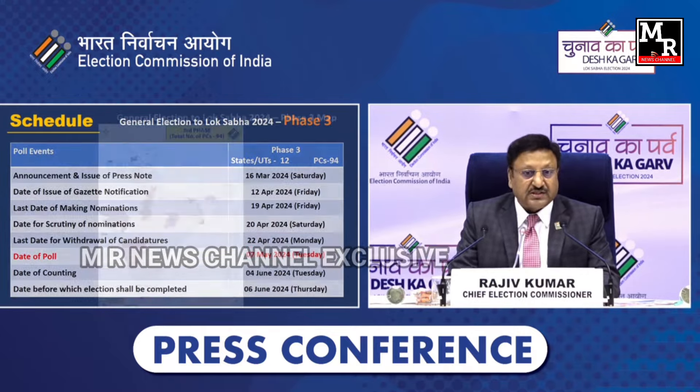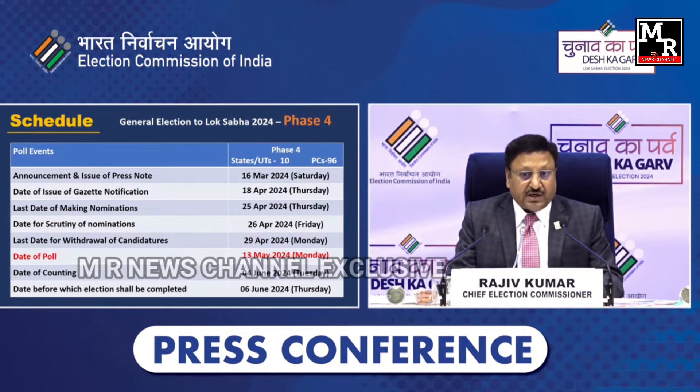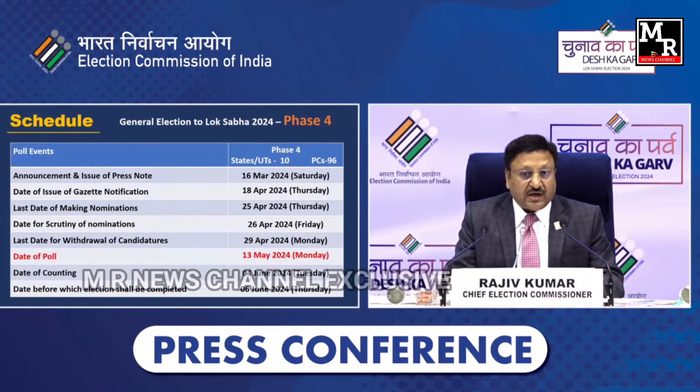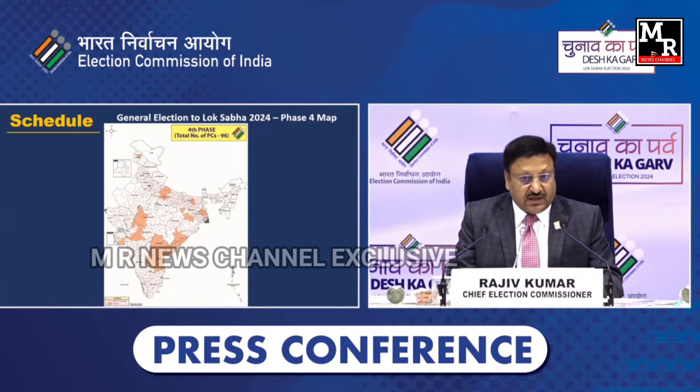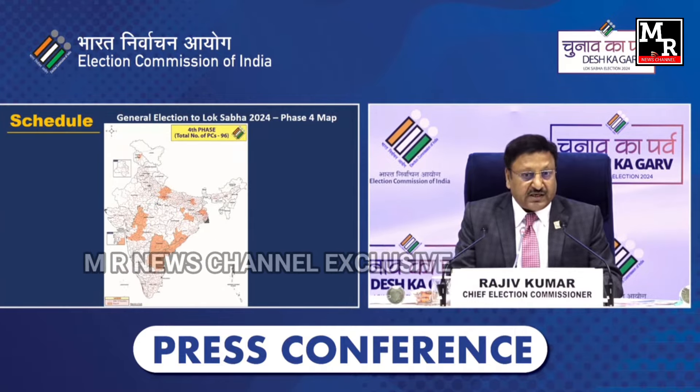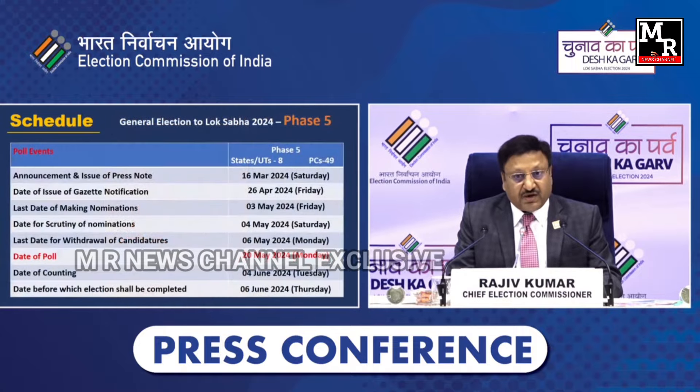In the fourth phase, gazette notification will be on 18th April and date of polling would be 13th of May. The date of counting across the entire country would be 4th June for all by-elections, for the assembly elections, and for the parliamentary elections. By this time, Telangana, Andhra, and Odisha will be voting, and the entire South India would be complete, entire Western India would be complete, and the Northeast would be complete.